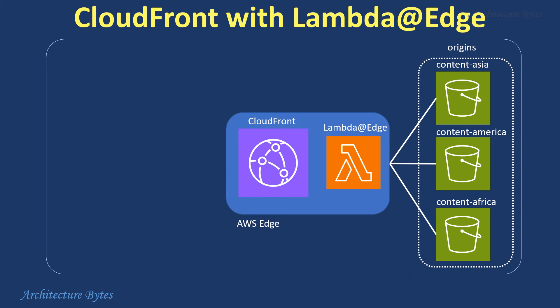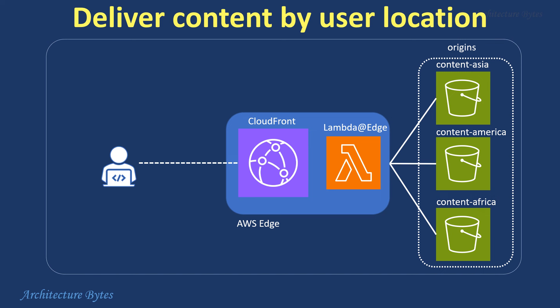Next, create a CloudFront distribution with a Lambda@Edge function that intercepts user requests and examines the HTTP header CloudFrontViewerCountry to determine the user's location. Based on that, it switches the origin to be used. This ensures that correct location-specific content is served via CloudFront.